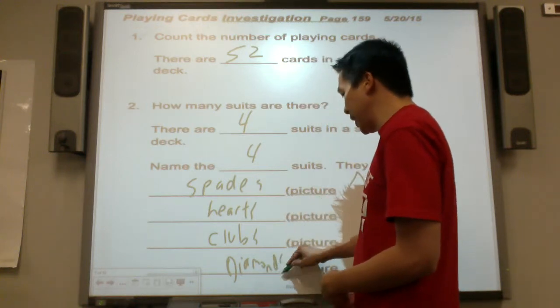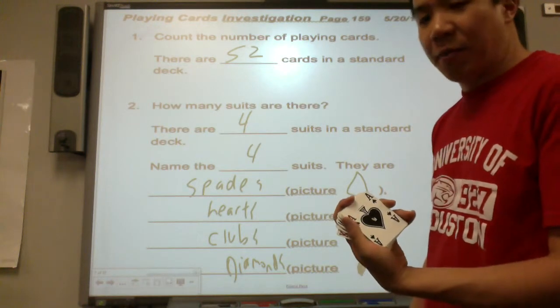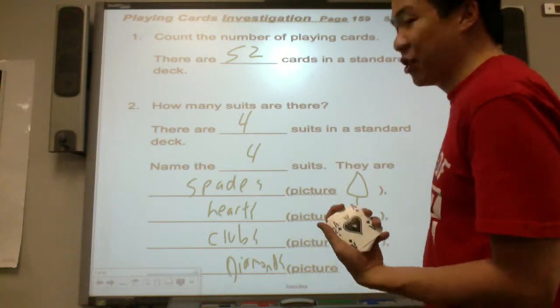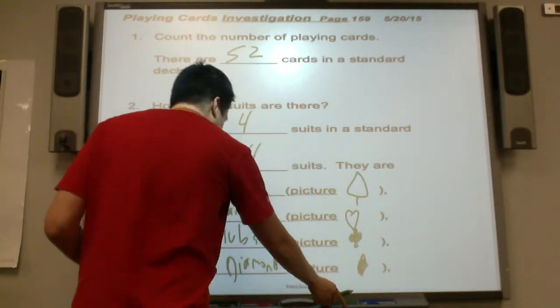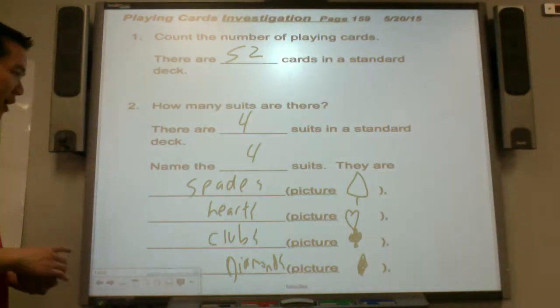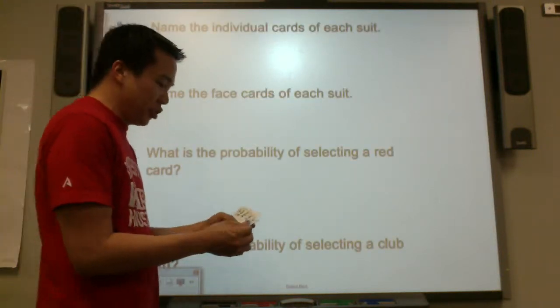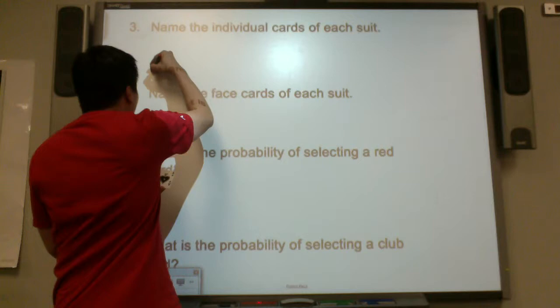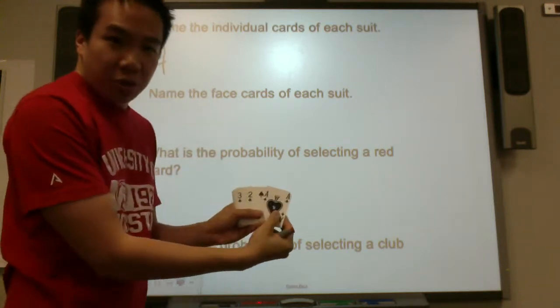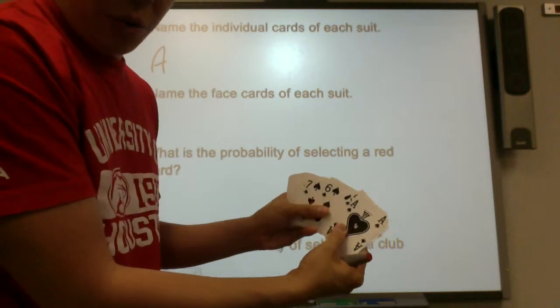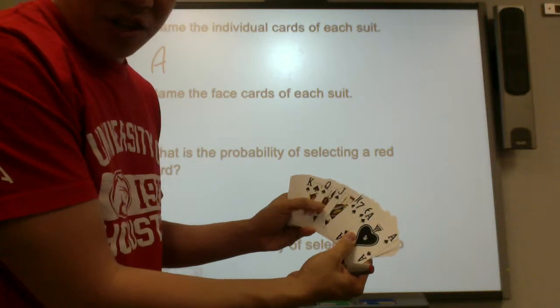So there are four suits in a standard deck of playing cards. They are spades, hearts, clubs, and diamonds. Name the individual cards of each suit. Starts with ace or one. Then you go to ace, two, three, four, five, six, seven, eight, nine, ten, jack, queen, king.